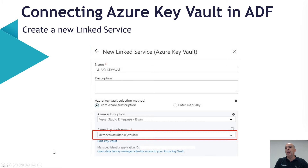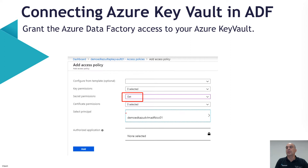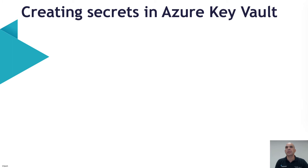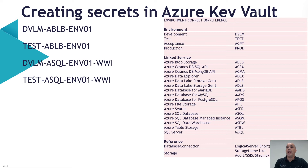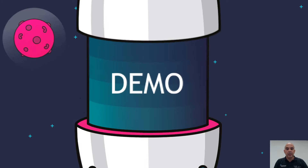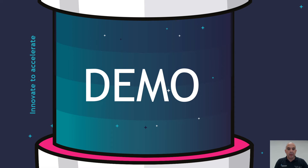We need to create a new linked service within our data factory to make the key vault available. As you can see below, there's an option to grant the data factory managed identity access to your key vault directly when you create it. Once we've created the key vault, we can start creating our secrets. For today, we need secrets for the development environment for blob storage and the SQL environment, and the same for the test environment. I'm also using naming conventions here to use them dynamically later.